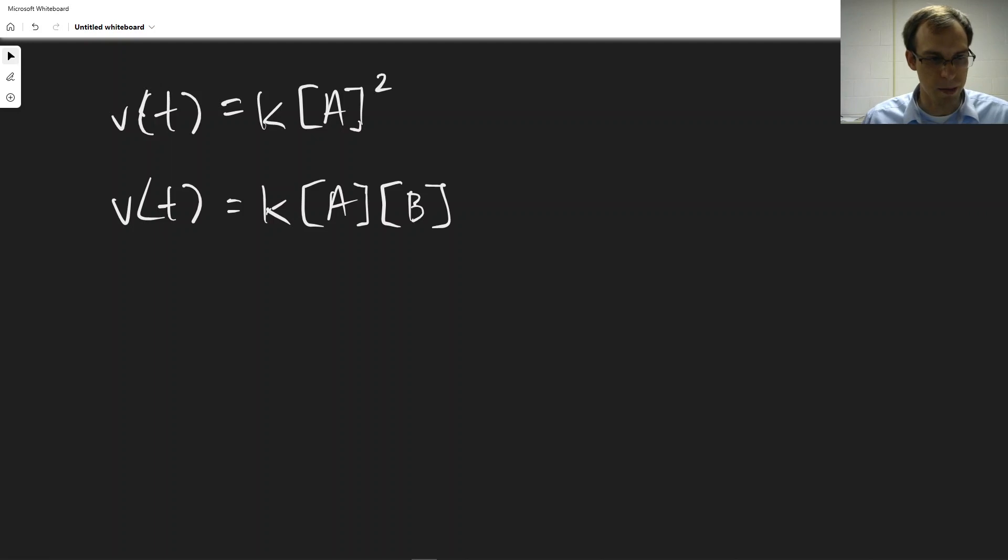And we get a more complicated expression here. So the expression we get is that kt is equal to, we still get this 1 over dependence for the initial concentrations. So we get 1 over [A]₀ minus 1 over [B]₀ in the denominator here.